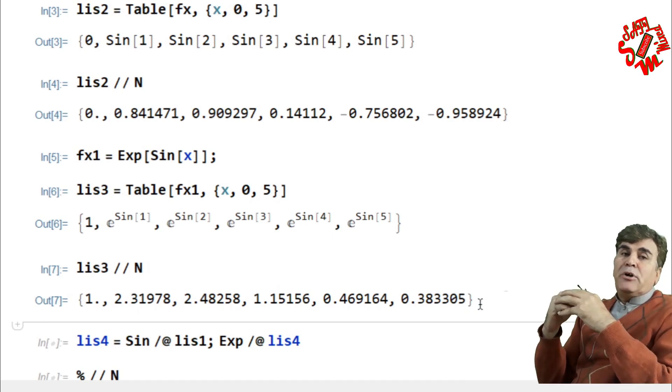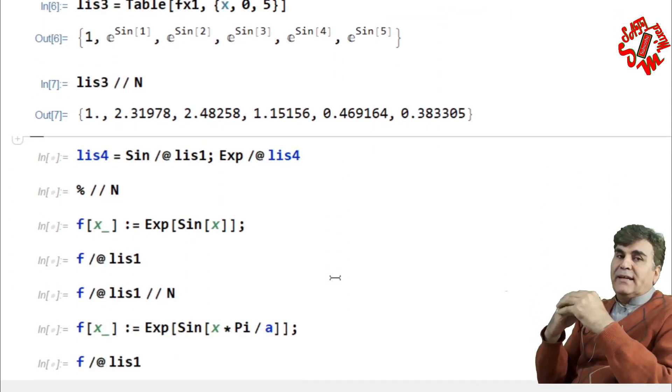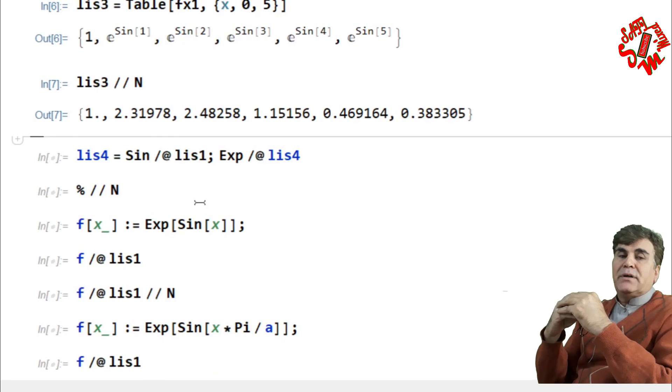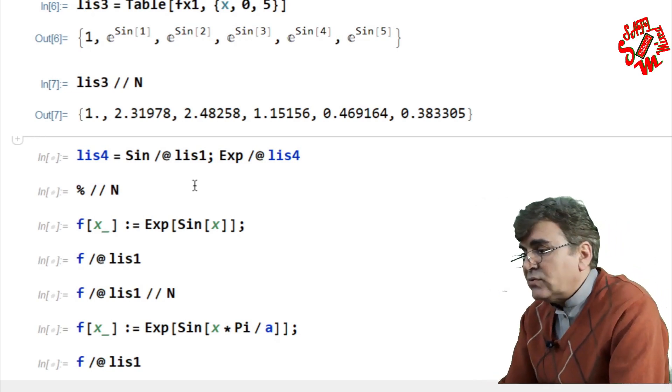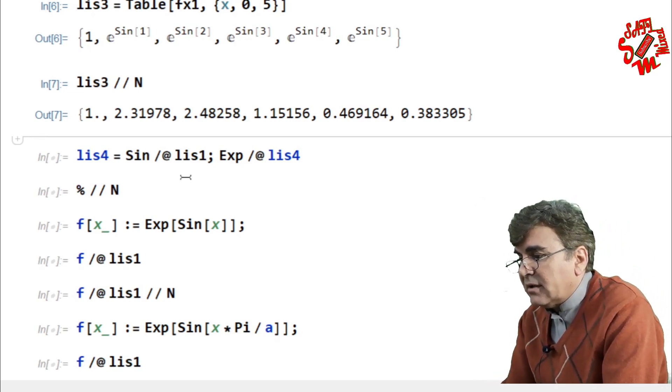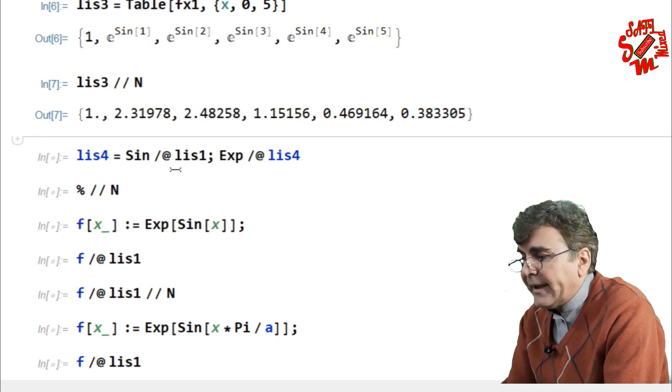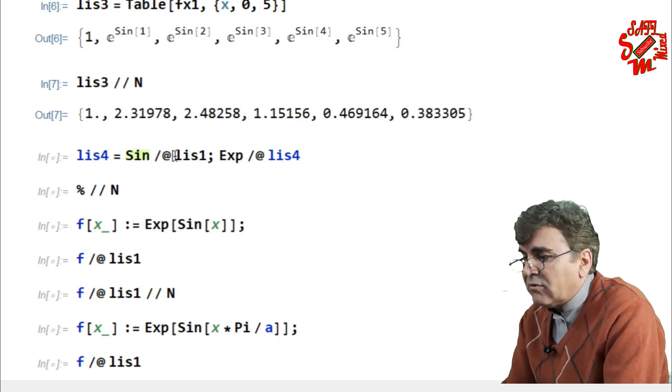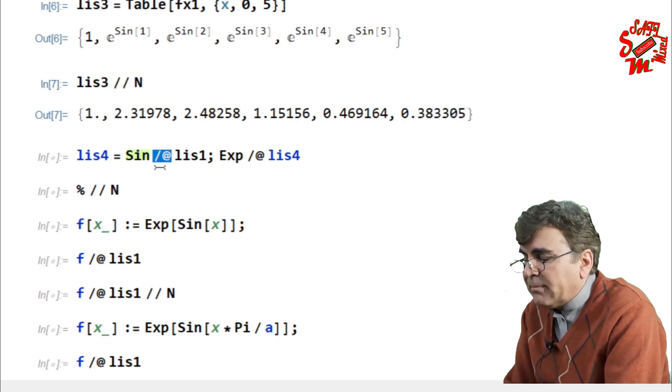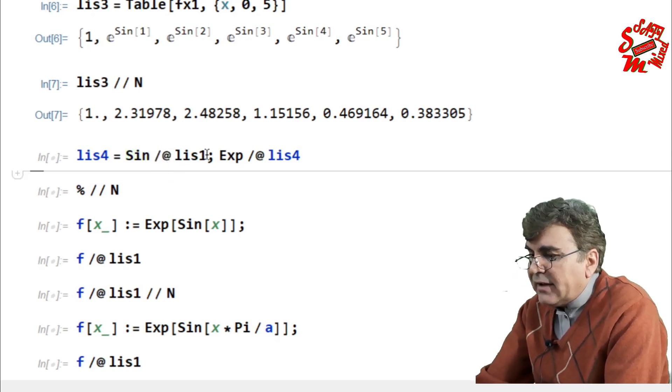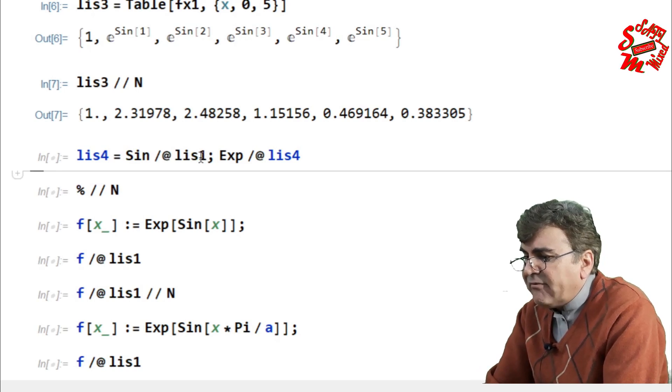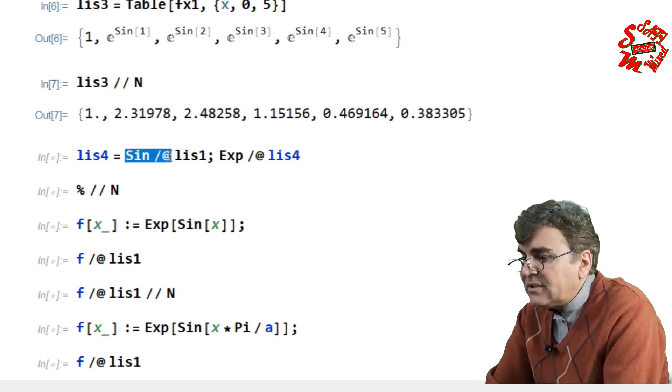Now the next step is to use a built-in command of Mathematica that maps a function to each element of the list and that function is map. You can write it as map, but I would like to use the programming language and in programming the map function is applied by backslash followed by at. So what I do I first map sine function over the elements of the list and give it name lis4.